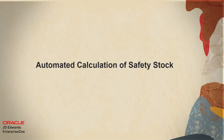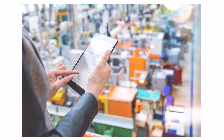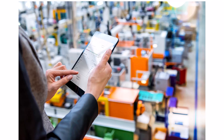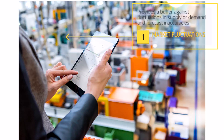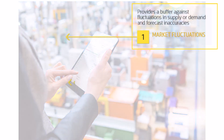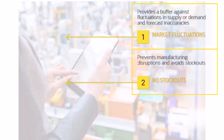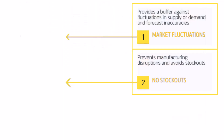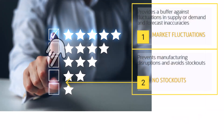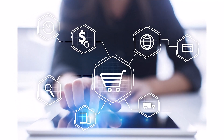Hi, for inventory planning, Safety Stock provides a buffer against unforeseen fluctuations in supply or demand and forecast inaccuracies to prevent manufacturing disruptions and avoid stockouts to keep customer service and satisfaction levels high. Ideally, Safety Stock value should be updated on a regular basis as demand and supply conditions change.